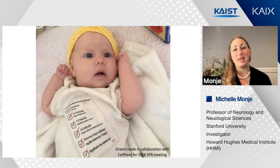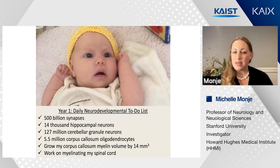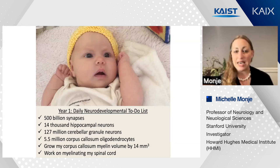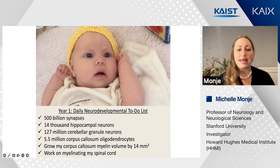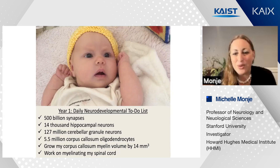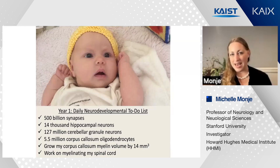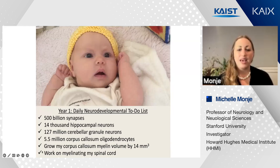It really is amazing when you stop and consider that in the first year of life, human infants make something on the order of 500 billion synapses every day, 14,000 new hippocampal neurons, and 127 million cerebellar granule cell neurons on average. But perhaps the biggest task that human infants have is to myelinate their central nervous system.